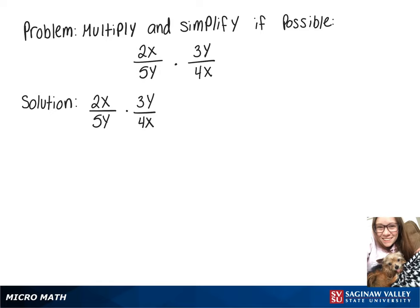We're going to do 2x over 5y times 3y over 4x. We'll multiply across the top and across the bottom, which on top will give us 2x times 3y, and on bottom will give us 5y times 4x.